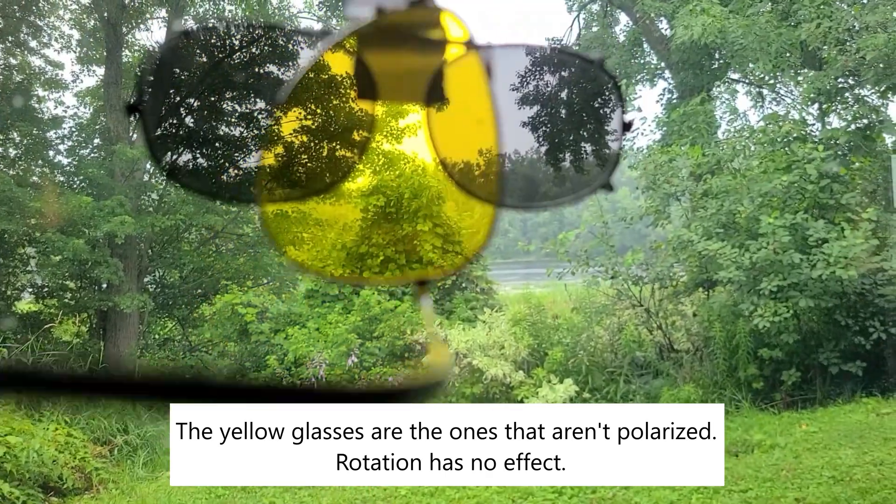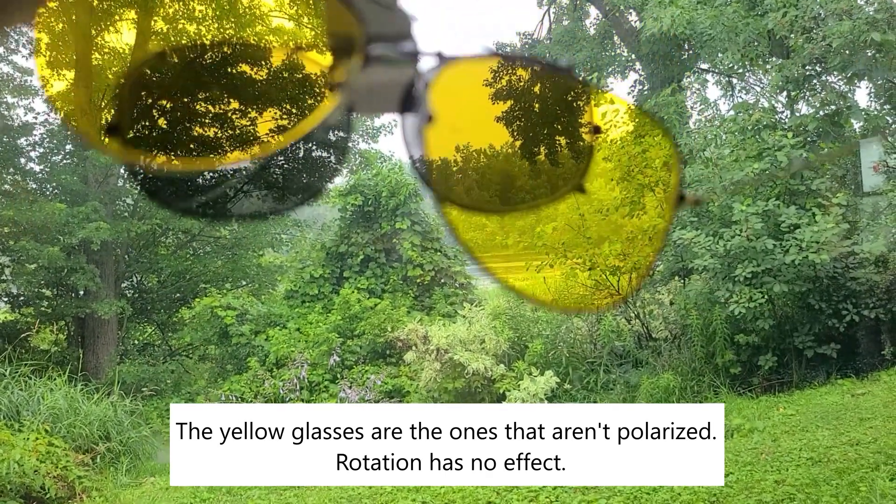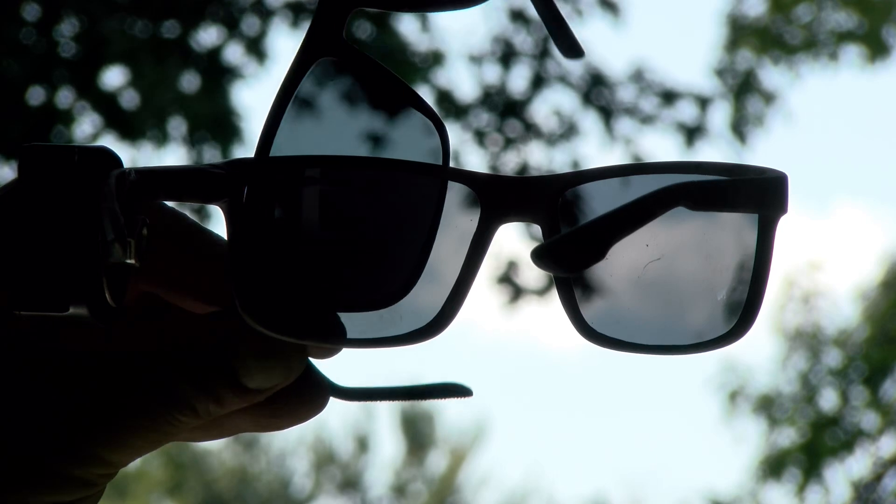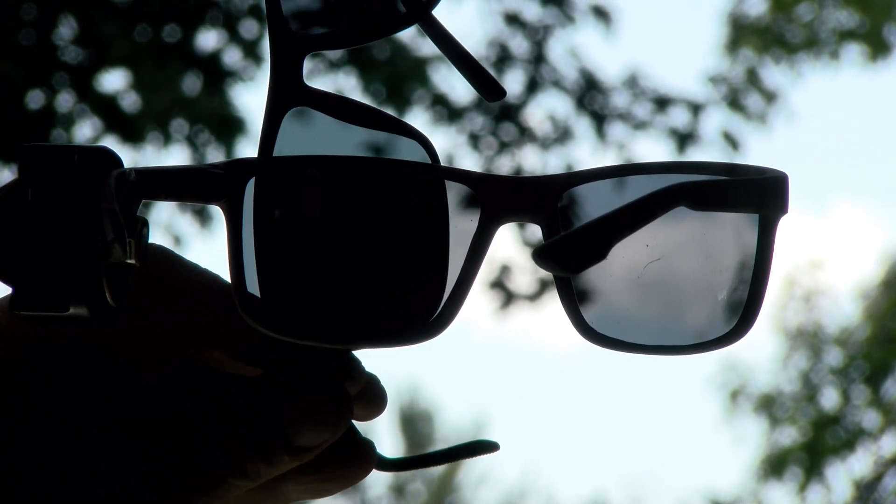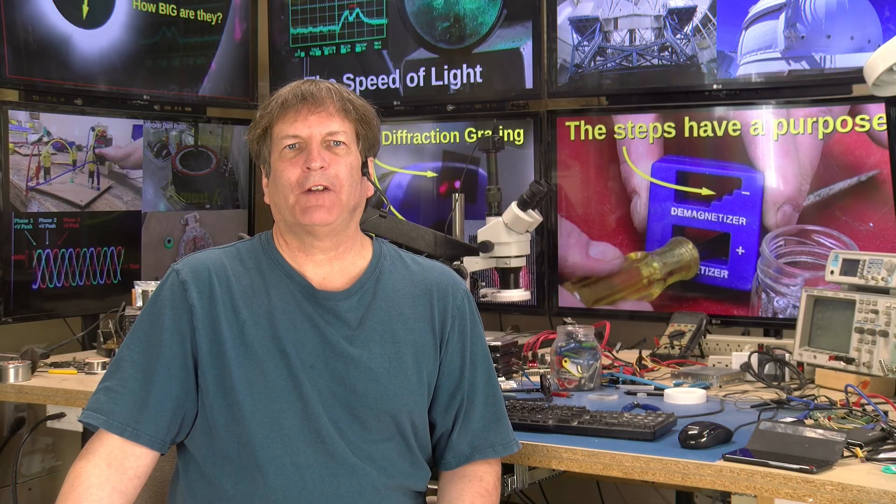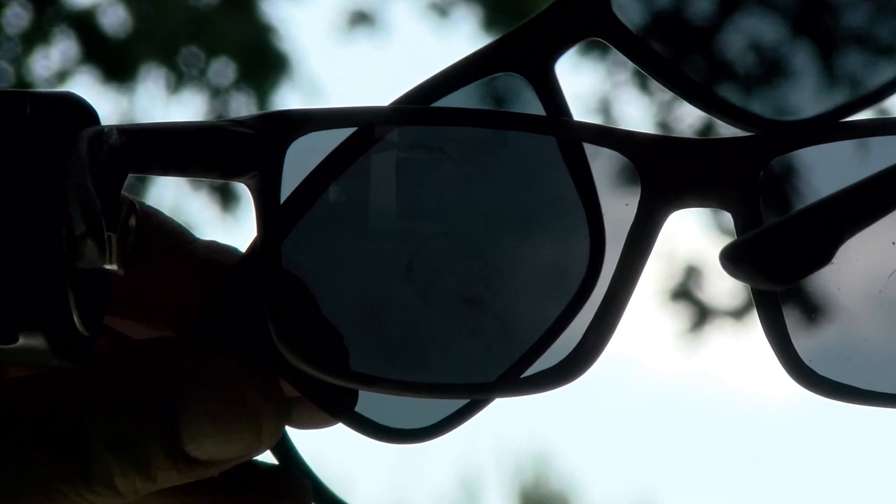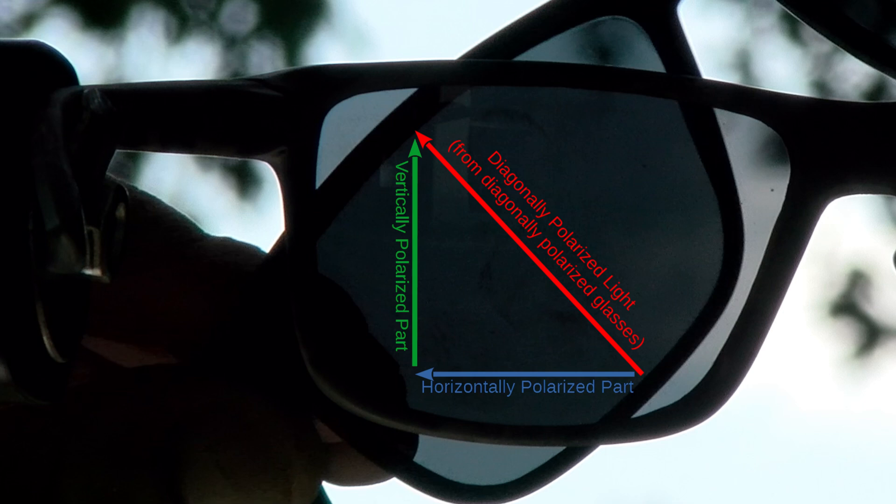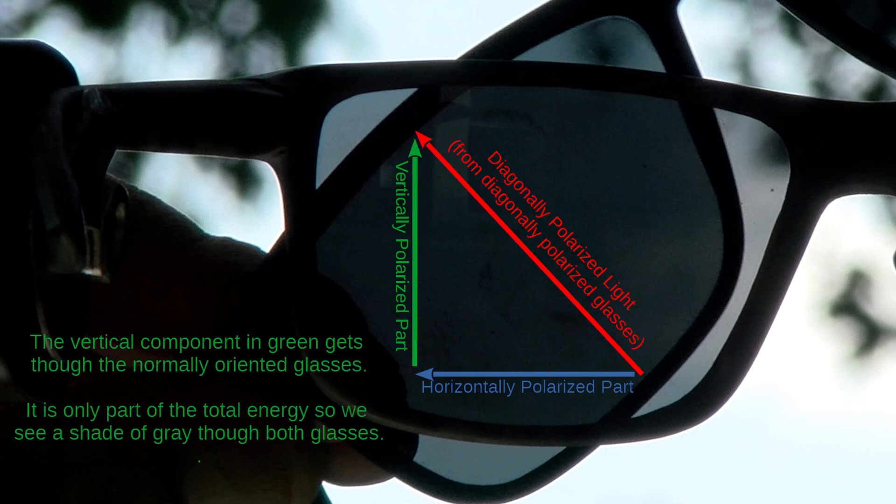And that's because the glasses you're holding vertically is only letting horizontally polarized light through, and the one you're wearing is blocking any light that is horizontally polarized. At all the in-between angles, some fraction of the electric field does get through. The portion of the diagonal field that is vertical, we can say that the diagonally polarized wave is made up of both vertically and horizontally polarized components.